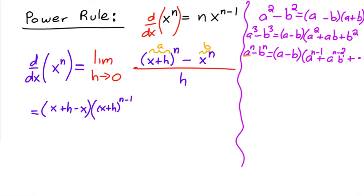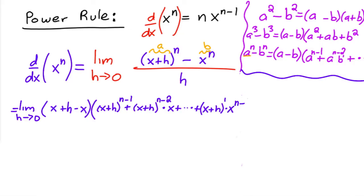x plus h to the n minus one, plus... and then also, actually I forgot, this is the limit as h approaches zero. Let me erase this guy right here. Okay, so then if we continue we would get x plus h to the n minus two, and then times b which is x to the one, and then plus dot dot dot plus x plus h to the one times x to the n minus two plus x to the n minus one.